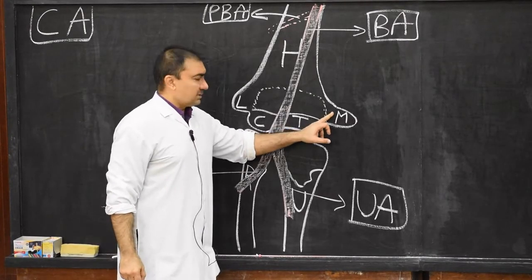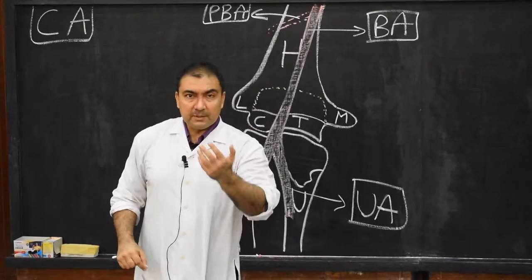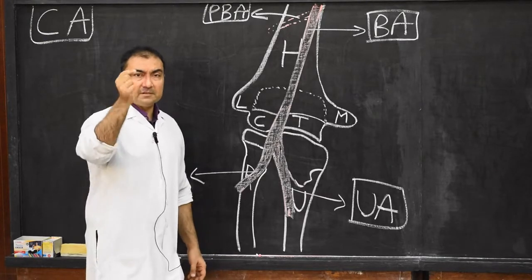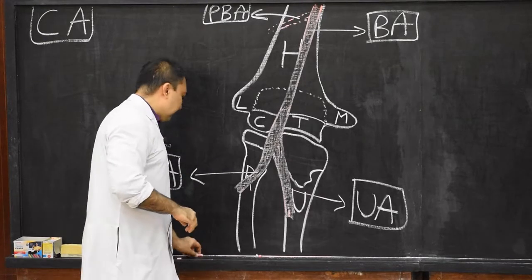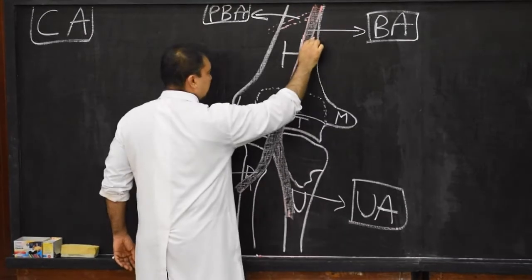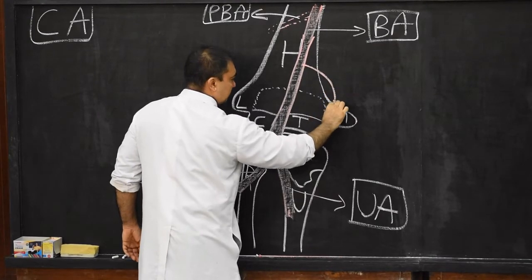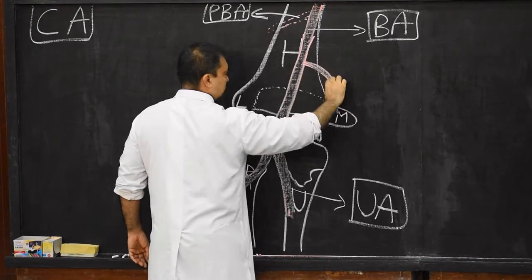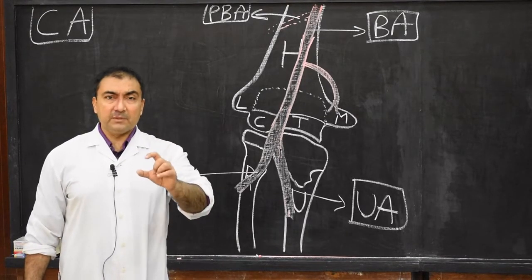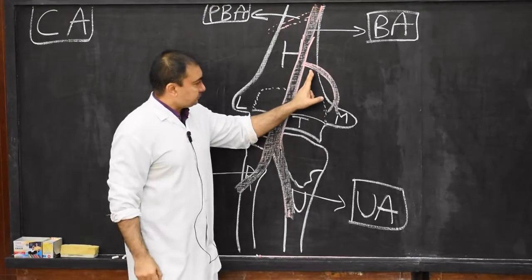We start with anastomosis on the medial epicondyle — first, anastomosis present anterior to the medial epicondyle. Two branches from above and one branch from below. In front of the medial epicondyle, the main branch coming from above is a branch of the brachial artery known as the inferior ulnar collateral artery. We show this branching pattern from the brachial artery and name it the inferior ulnar collateral artery.